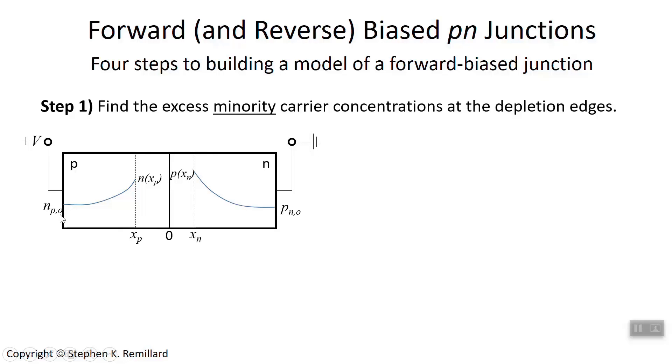N sub P0 means the electron concentration on the P-side, far away from the junction, in thermal equilibrium. That is, using the expression that N sub I equals the square root of Np.